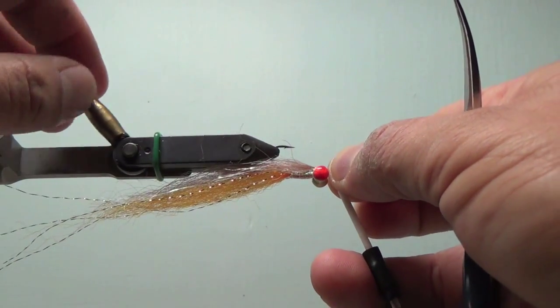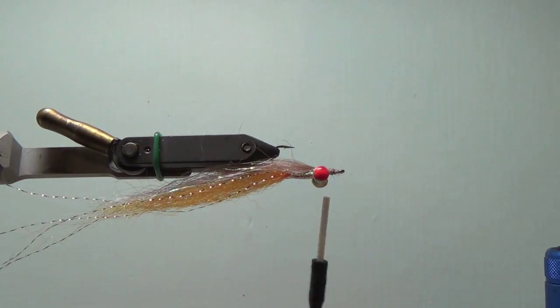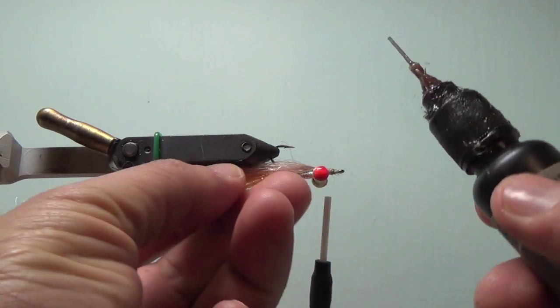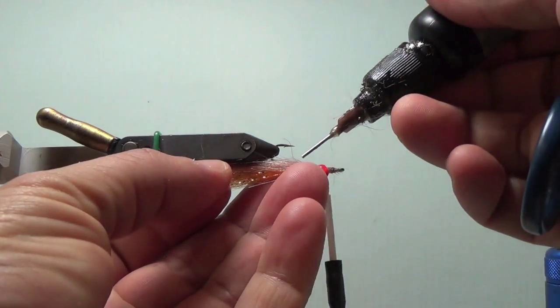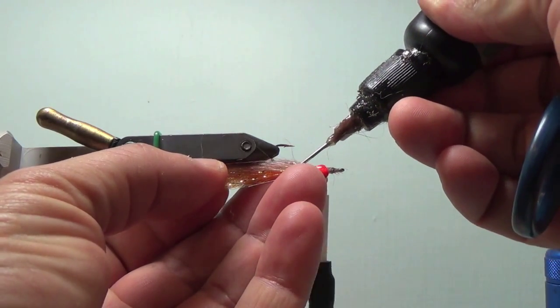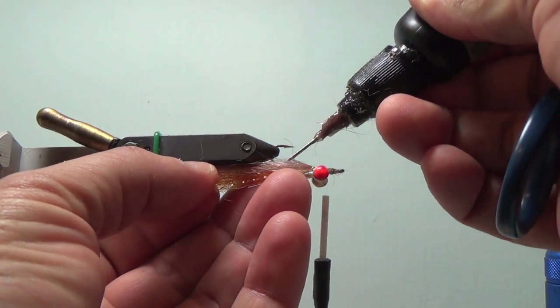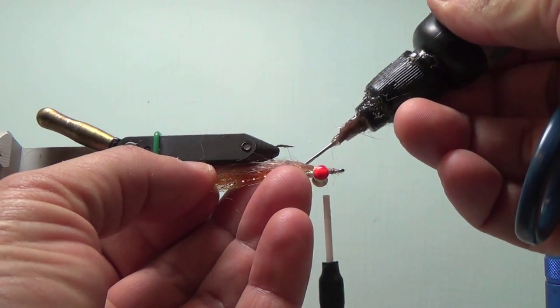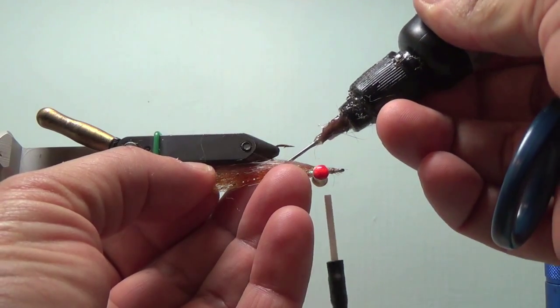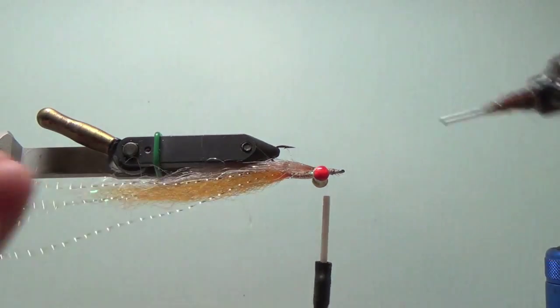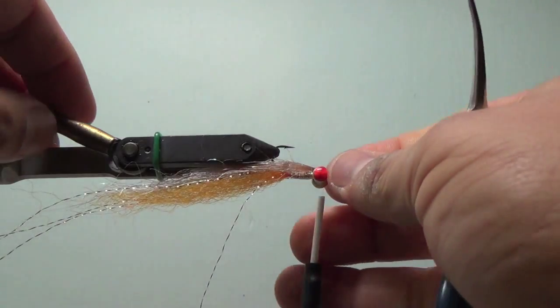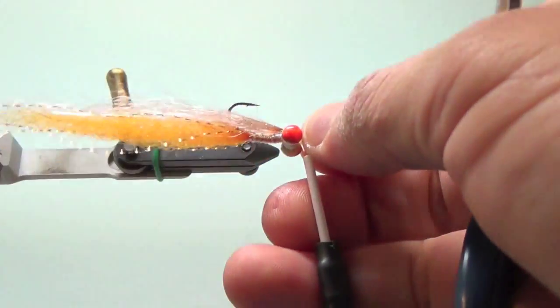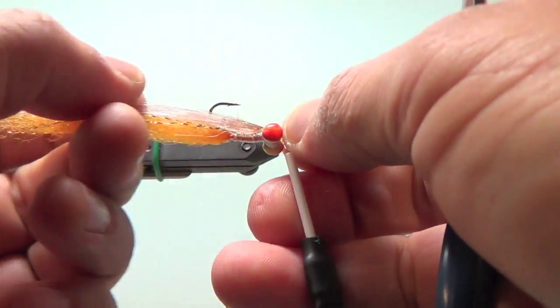The next thing I do is, and this is a very important part of this fly, I'm going to add in some CCG Hydro right here in the center of the core of this fly. Now, why do you do that? Because you've got to stiffen this SF material up a bit through the center. If you do not do this, what will happen is when you get this fly wet and you fish it, it'll turn into a matted mess.